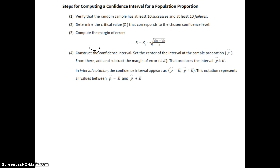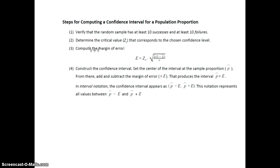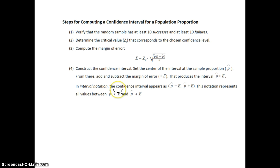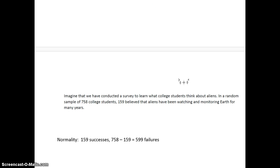To construct a confidence interval: first, make sure the random sample has at least 10 successes and 10 failures for normality. Then, for the specific confidence level, get the z-critical value. Compute the margin of error, which requires p-hat: it's the z-critical value times the estimated standard error. Finally, construct the interval as p-hat minus the margin of error to p-hat plus the margin of error.